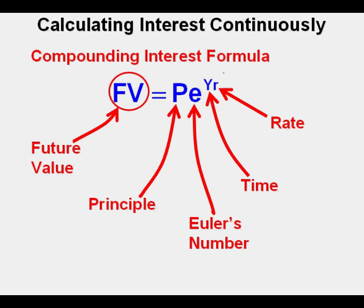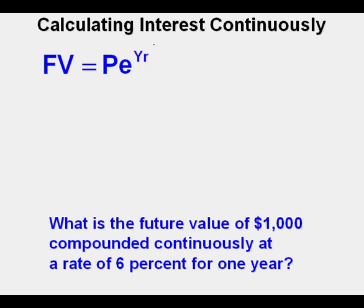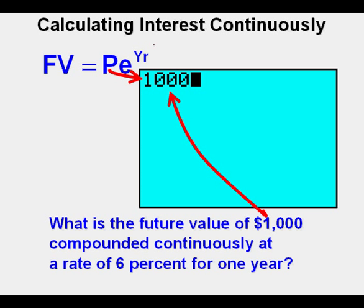A rate of 5% per year, for instance, will be .05, but only when years are represented by Y. Let's do a simple example: $1,000 compounded continuously at a rate of 6% over one year. We first apply the formula by putting in 1,000 for the principal. Next we put in Euler's constant E by pressing the second key, then the division sign key on the right side of the keypad, giving us the E here.